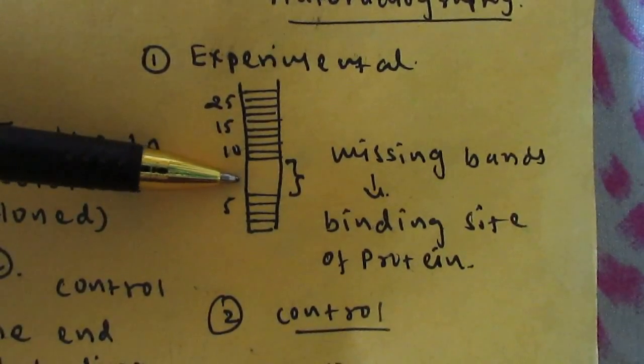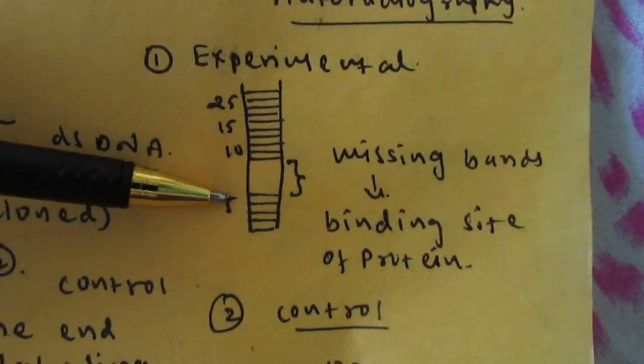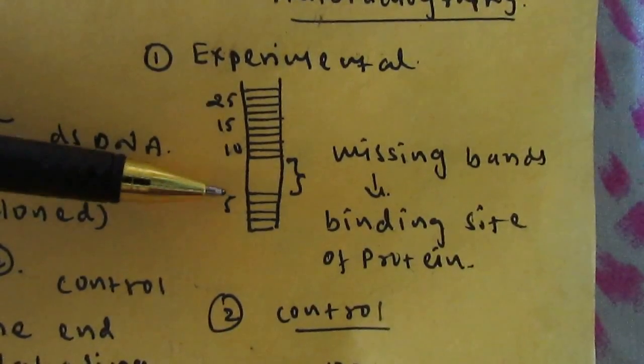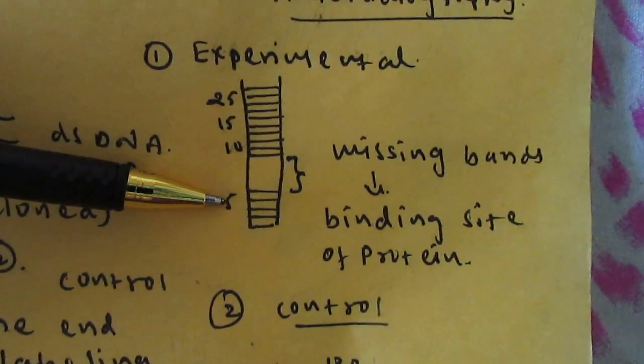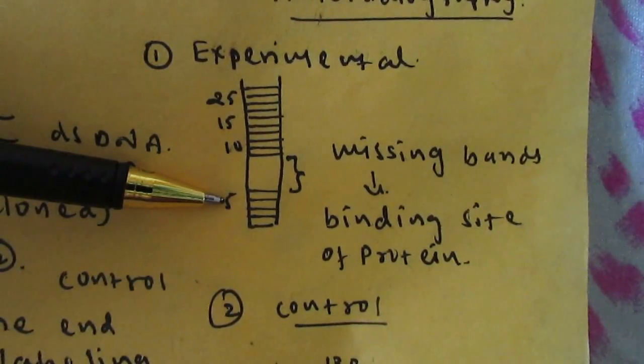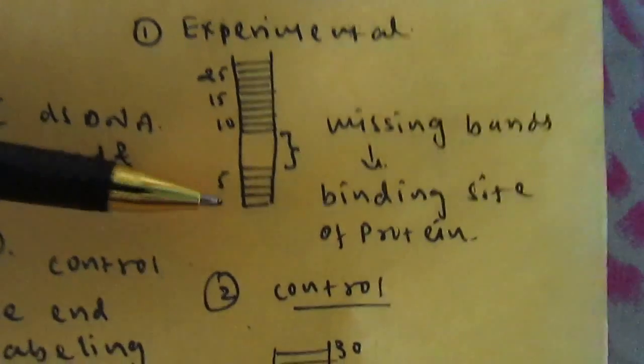Furthermore, if we take this nucleotide sequence and send it for sequencing, we will get the exact identity of the particular DNA sequence that will suggest the particular binding site or the location of the protein molecule.